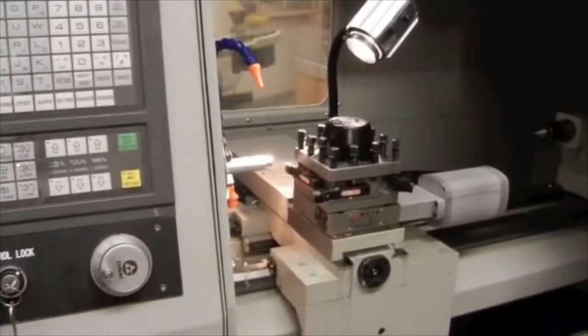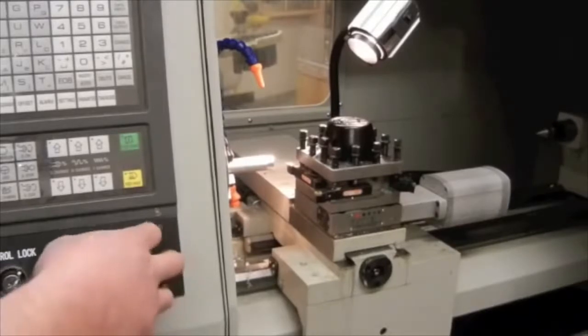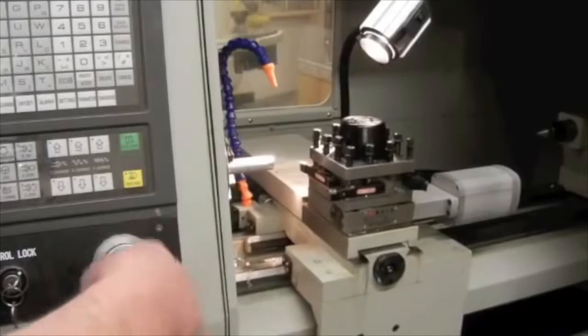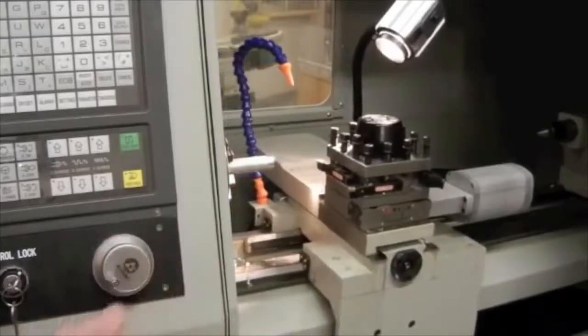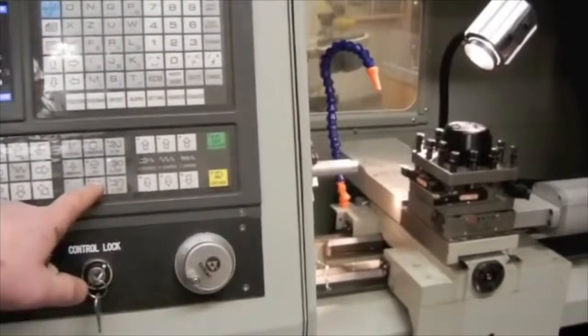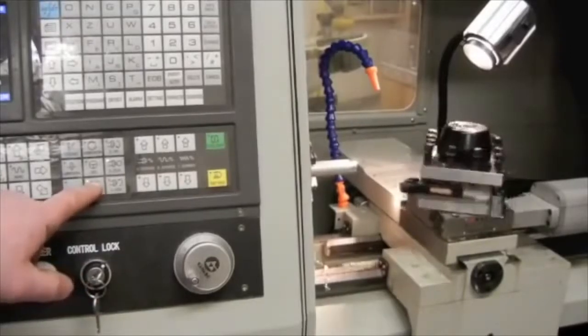So I'll quickly use my MPG hand wheel to move my tool carousel further away from my part to do a safe tool change. And I press the tool change button until I get to tool number four, which is the cutoff tool.